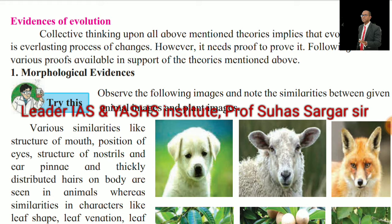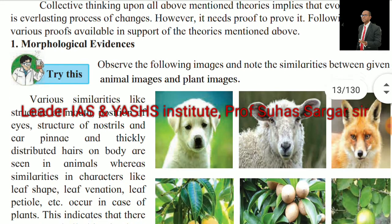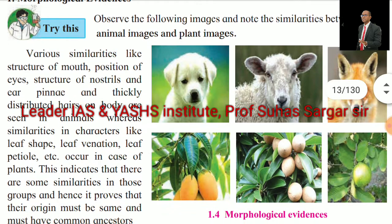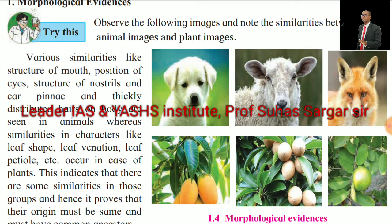Collective thinking upon these theories implies that evolution is an everlasting process of changes; however, it needs proof. The following are the various proofs available in support of these theories. First, Morphological Evidence. Observe the following images and note the similarities between given animal images and plant images. See the pictures of morphological evidences.